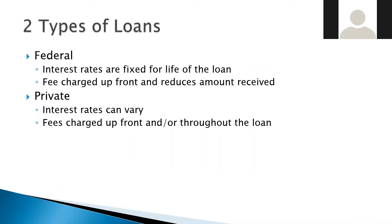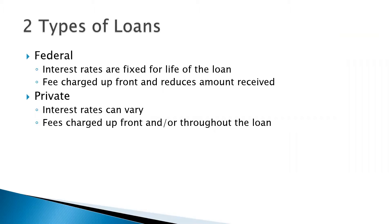There are two types of student loans. The first important thing to know is that there are federal loans and private loans. Federal loans have a fixed interest rate over the life of the loan. Fees are charged upfront and reduce the amount received — so if the fee is $50 and you get $1,000, you actually receive $950. On the private loan side, interest rates can be fixed or variable, and fees may be charged upfront. It's specific to whatever financing company you're working through, whether it's a bank or some other program.